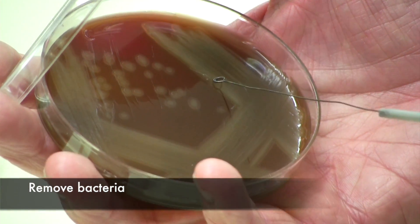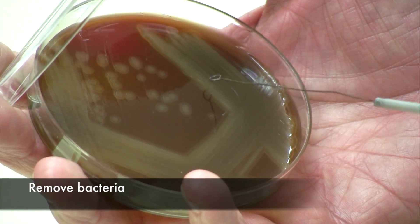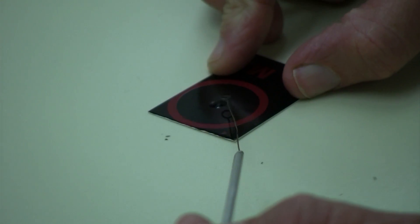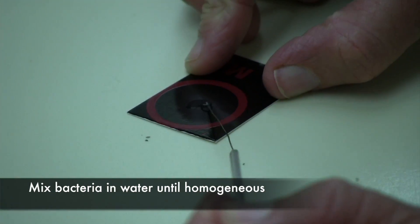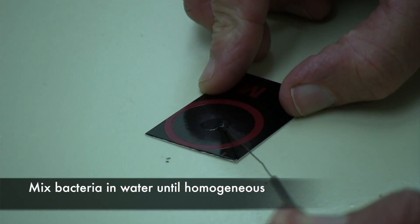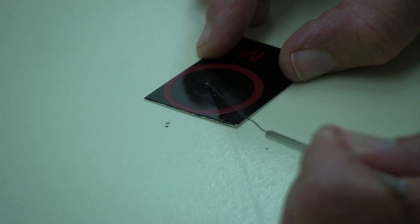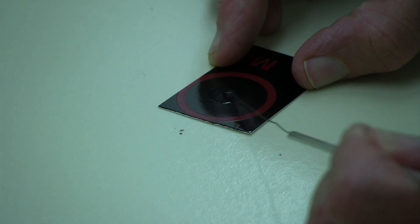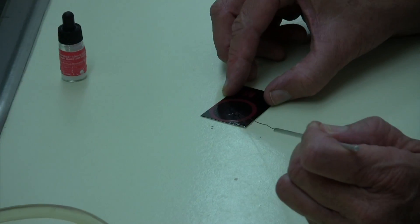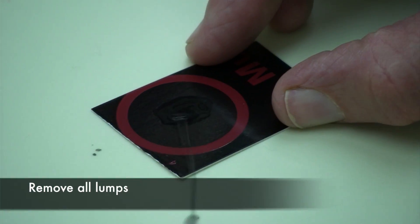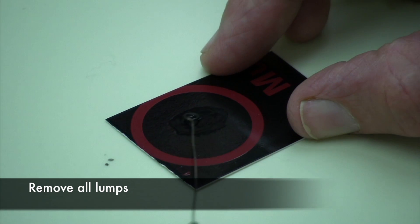You want to use a lot of bacteria for this test and you're going to emulsify that bacteria in that drop. Now, strep pneumo does not reflect light very well, so you won't see a lot of milkiness, but you want to make sure you get all the lumps out.